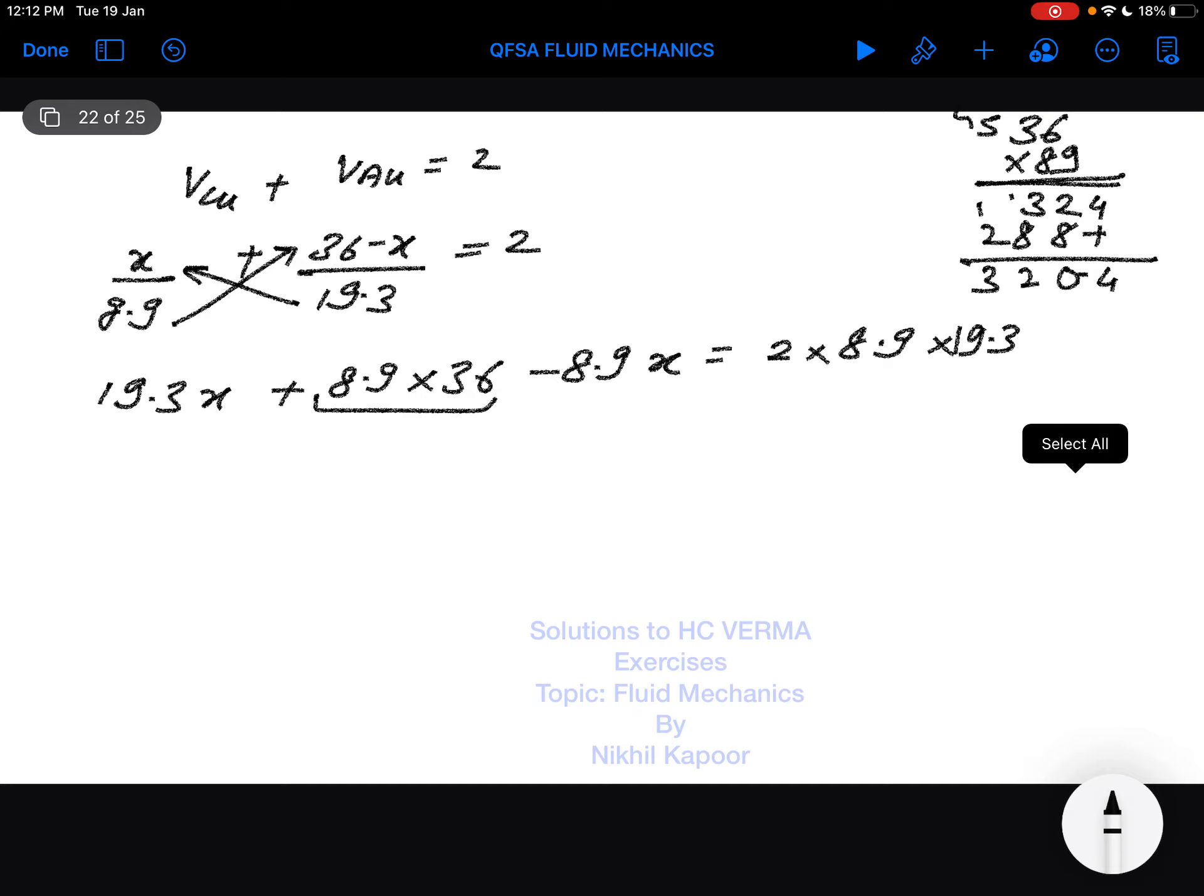Now solving these two terms: 19.3x minus 8.9x. Subtracting 19.3 minus 8.9 gives 10.4, so we have 10.4x plus 320.4.